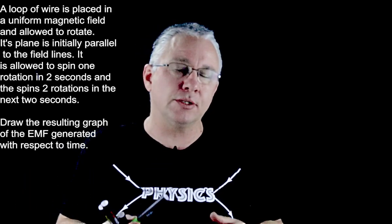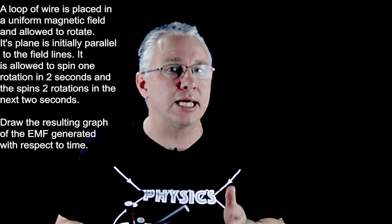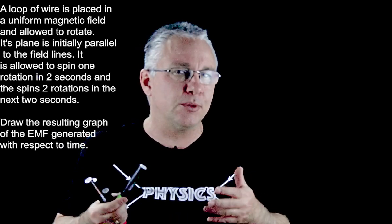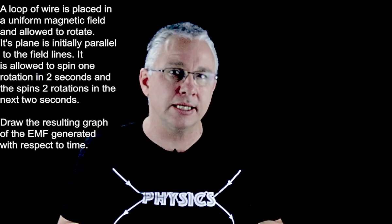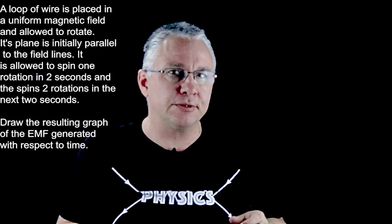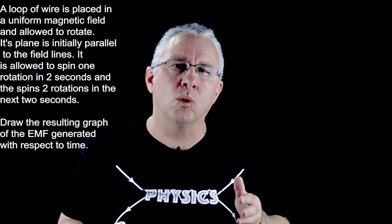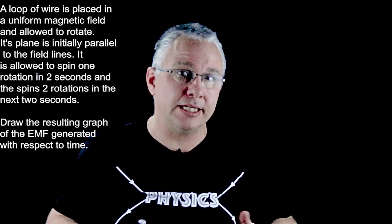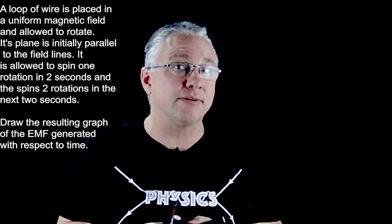In this particular question we are dealing with a loop of wire that is placed within a magnetic field and then we're told that it's going to rotate. But it's going to rotate a little bit differently and we're asked to work out what the EMF generated is in terms of how it's represented in a graph.